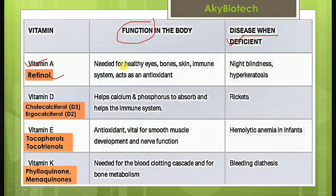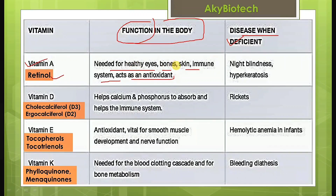Vitamin A — another name for it is retinol. Its function in the body is that it is needed for healthy eyes, bones, skin, and immune system, and it acts as an antioxidant. If there is a deficiency of vitamin A, it leads to night blindness and hyperkeratosis.